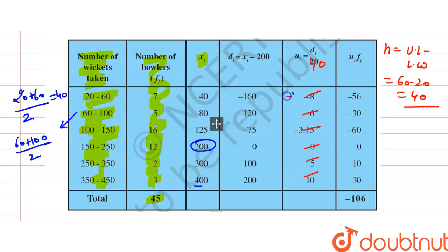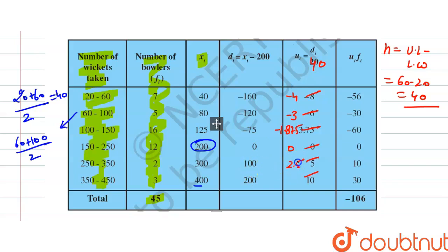The ui values are: −160/40 = −4; −120/40 = −3; −75/40 = −1.875; 0/40 = 0; 100/40 = 2.5; 200/40 = 5. Now we need to find fi×ui for each class.